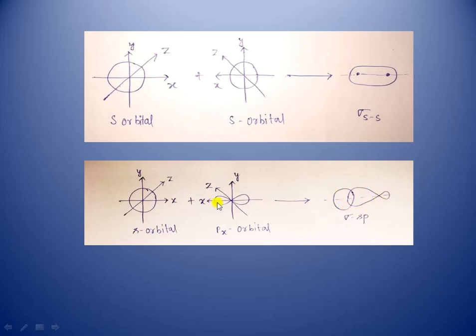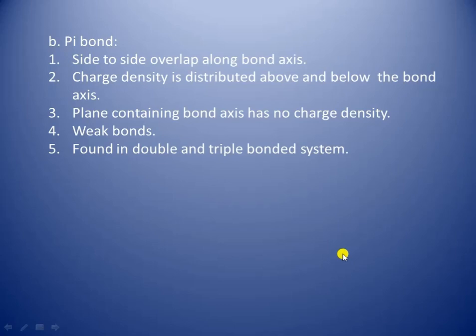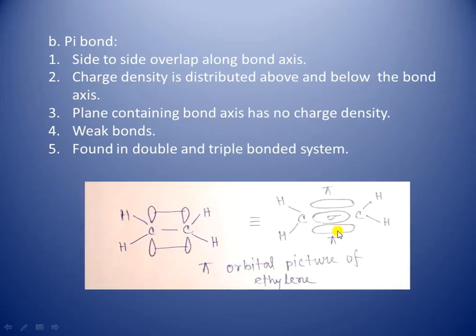As the charge density is along the bond axis, it cannot be broken easily. Now let's move on to pi bond. A pi bond is formed by the side-to-side overlap of two parallel atomic orbitals. The electron density of pi bond is not cylindrically symmetrical around the bond axis but is distributed above and below the bond axis. The plane containing the bond axis has no charge density. That is why pi bonds are easy to break and weaker than sigma bonds.